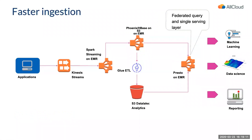For faster ingestion with real-time analytics, replace Kinesis Firehose with Kinesis Streams and process data into micro-batches using Spark Streaming. Then run a Glue ETL job to push data into the data lake. A Presto on EMR cluster can run regular jobs and perform federated queries, getting data from both an HBase key-value store streaming data and from S3, serving as a single federated query layer.